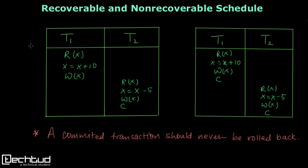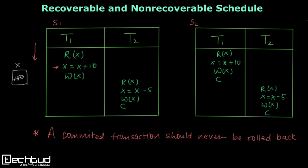Let's look at two examples. In schedule S1, this is the timeline — operations occur in sequence. Transaction T1 starts with operation R(X), reading database item X. It increases the value by 10, then writes back. So if X initially has value 100, after T1 writes, it becomes 110. But this transaction is not yet committed.